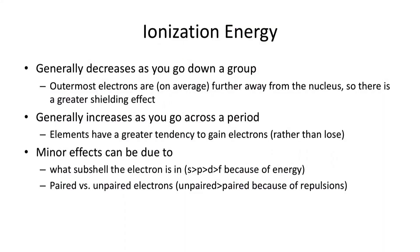Here's another periodic trend — ionization energy. What happens as you go down and as you go across? Generally speaking, as you go down a group, the ionization energy tends to decrease, which makes sense because ionization energy is the energy needed to remove an electron. As you go further out, it becomes easier to lose electrons — the nucleus doesn't have such a strong hold on them. So as atoms get bigger, it becomes easier for them to ionize.